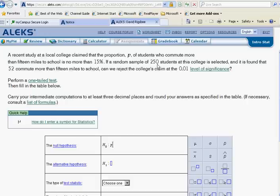In a random sample of 250 students at this college, it is found that 52 commute more than 15 miles to school. So can we reject at the 0.01 level of significance the college's claim?